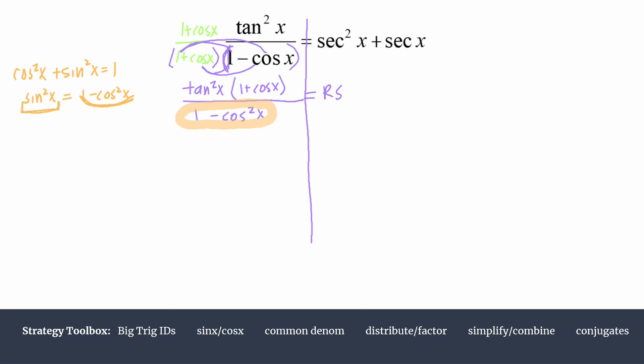We're keeping that numerator as it is. It's still tangent squared times 1 plus cosine x, all over sine squared, equals the right side.